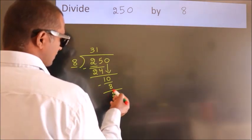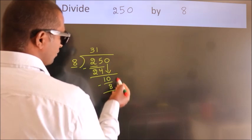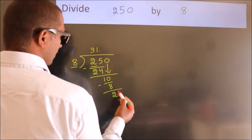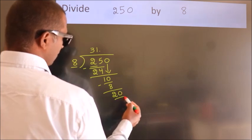After this, no more numbers to bring it down. So what we do is, we put dot, take 0. So 20.